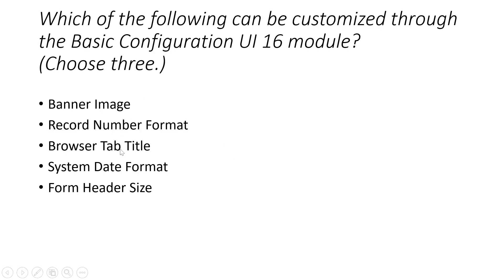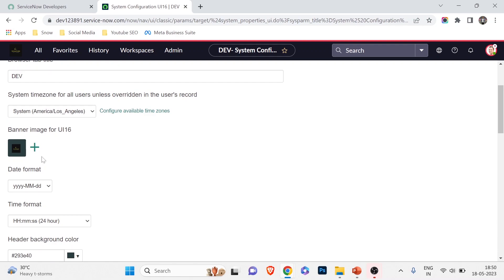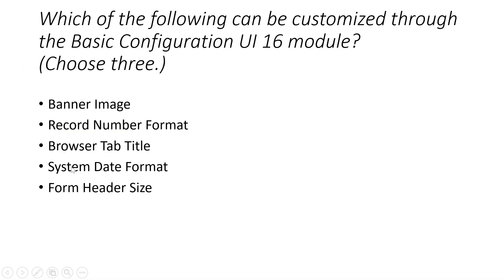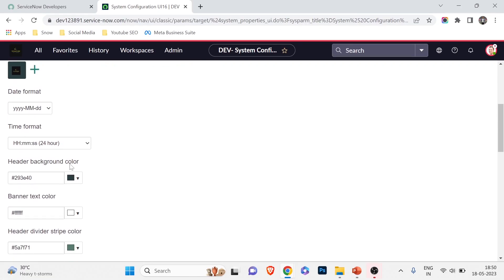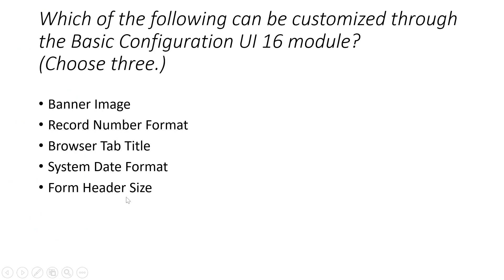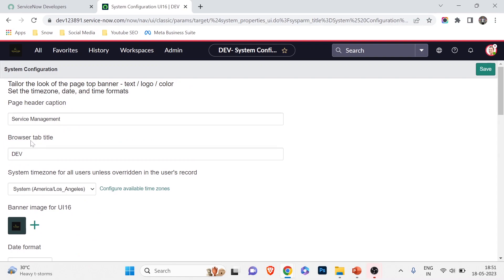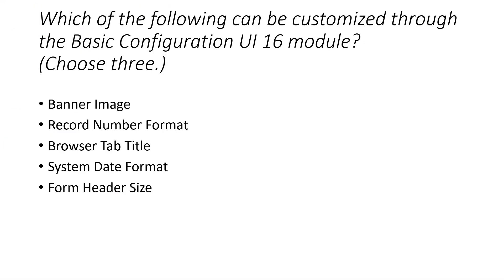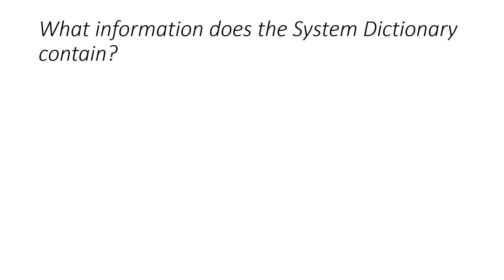We can change the banner image, the browser tab title, and the system date format. Let me confirm — you can see banner image, system date format, and browser tab title are all present. Header background color and record number format are not available there. So the three correct options are: banner image, browser tab title, and system date format.